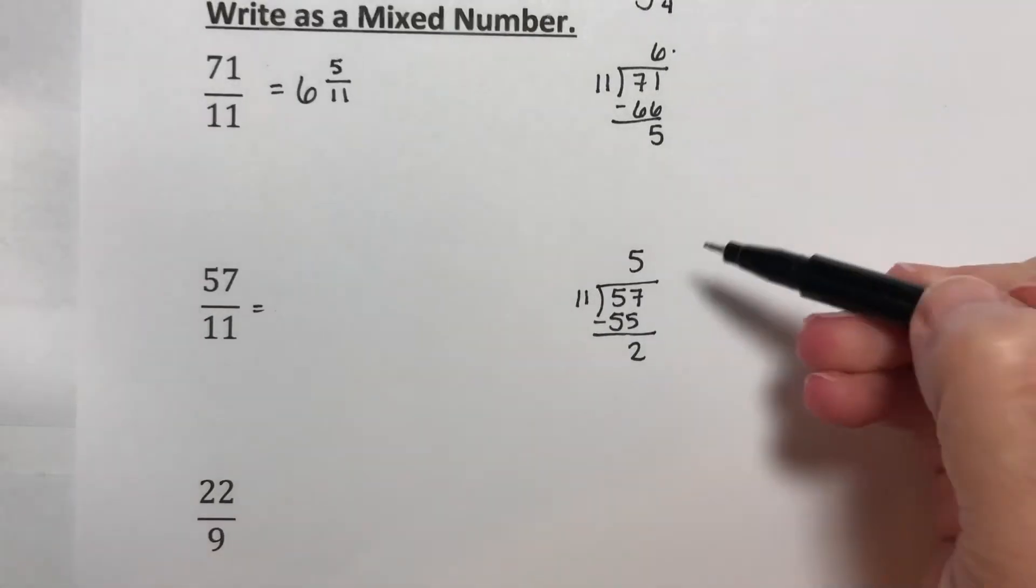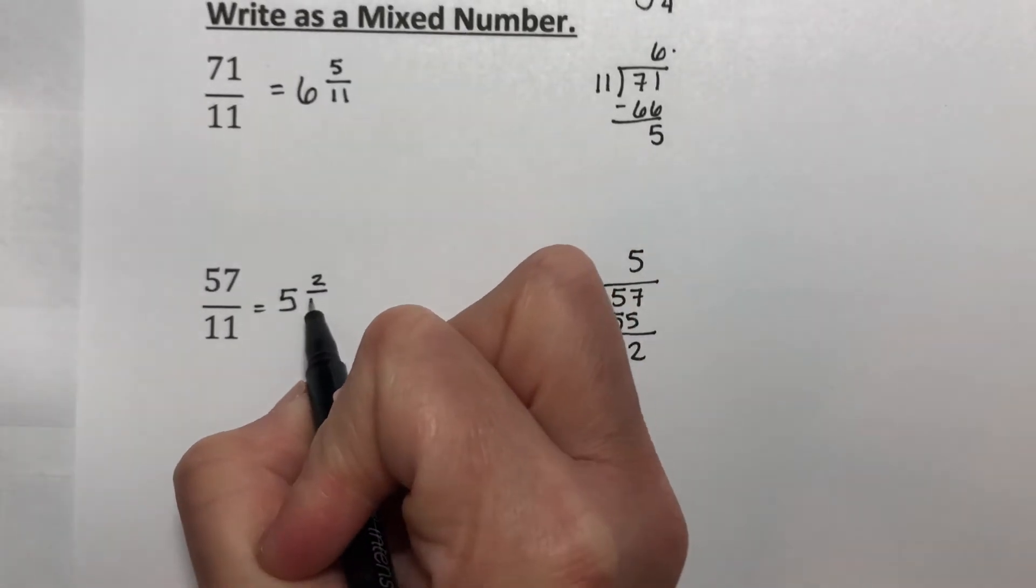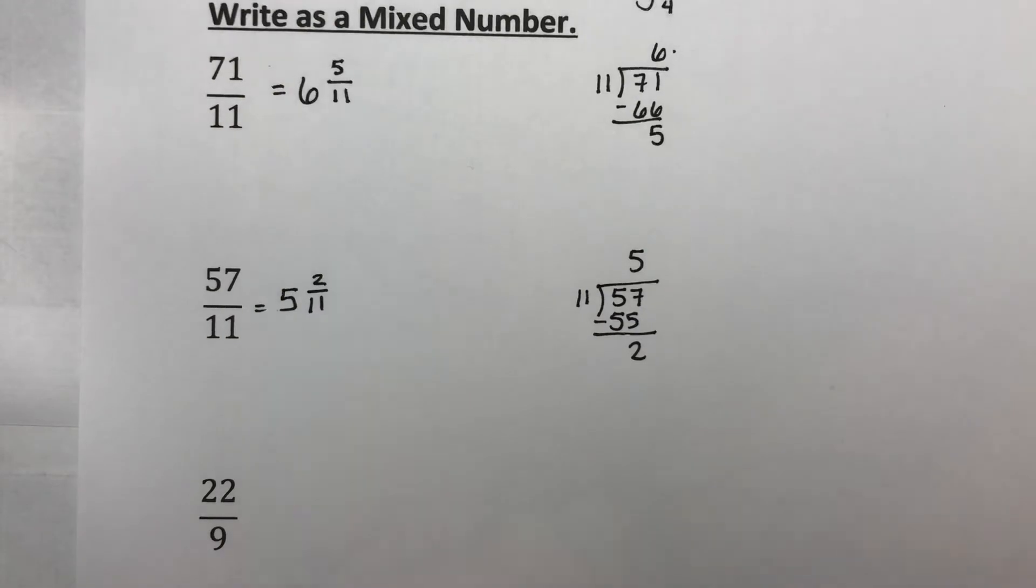So this is the same thing as 5 and 2 elevenths. 5 with 2 left over.